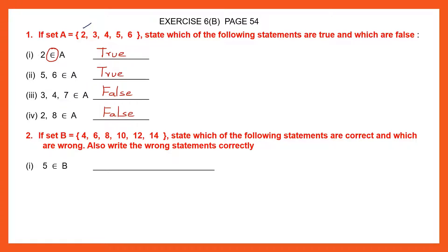Question 1: 5 belongs to set B. If you look carefully, you cannot find 5 in the elements of set B. So this statement is wrong. Now we need to correct the statement. We say '5 does not belong to set B'. When I put this symbol it means 'belongs to', but if I strike it off, it means 'does not belong to'. So 5 does not belong to set B.